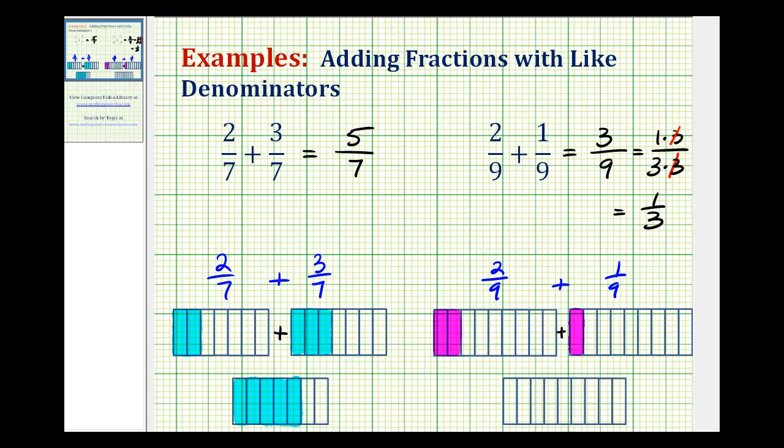So we'd have a total of 3 pieces, where each piece represents 1/9, so we have a total of 3/9. But notice how if we were to divide this large rectangle, which equals 1, into 3 equal parts, here and here, we can see that this would simplify to 1/3, which we found above.